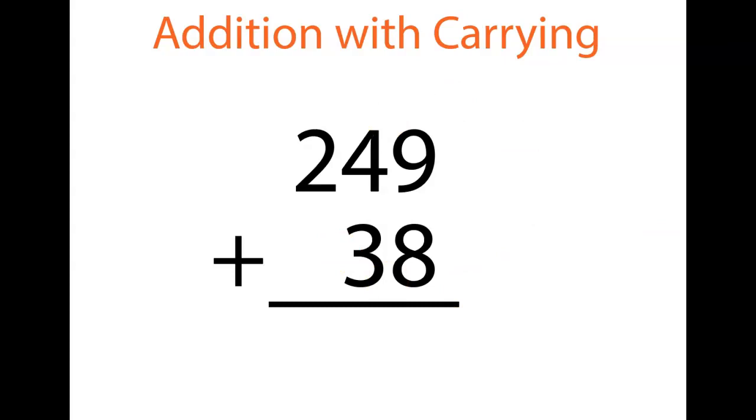Okay, here is our question. What do we do first? Well, we're going to go to our ones column. Nine plus eight is 17. Place the seven, carry the one into the tens column nicely and neatly stacked in the middle of that tens column.